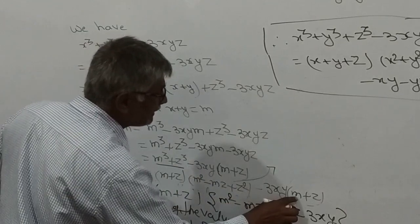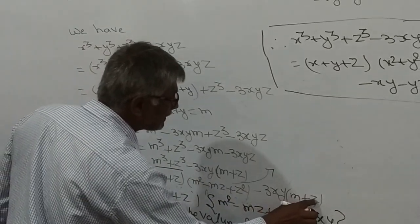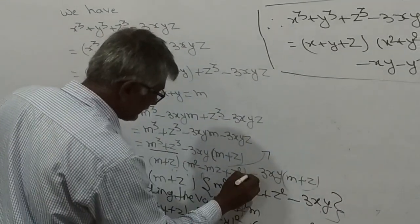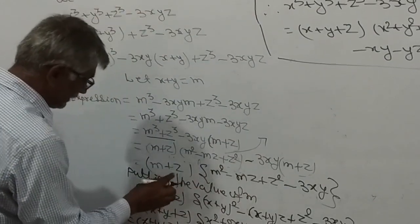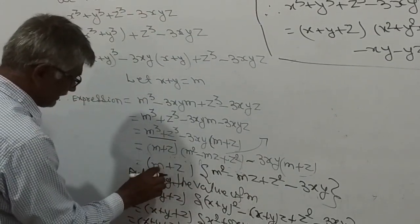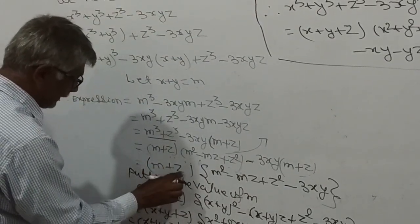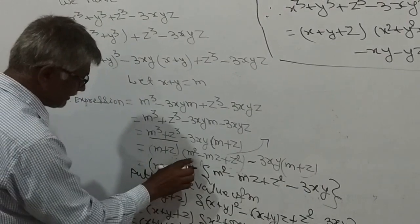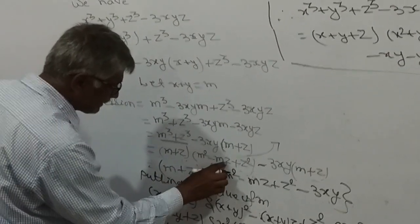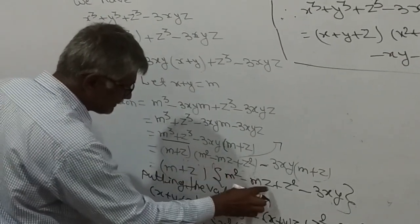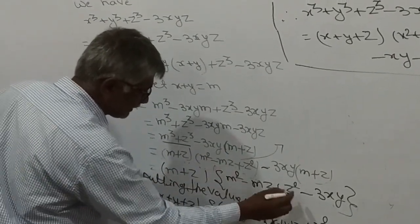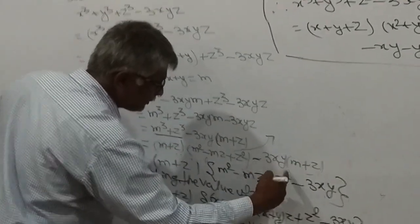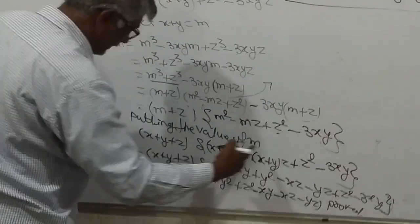We have (m + z)(m² − mz + z²) − 3xy(m + z). Taking (m + z) as common and dividing out, we get m² − mz + z² − 3xy. The (m + z) factor is on both left and right sides, so it cancels after factoring.